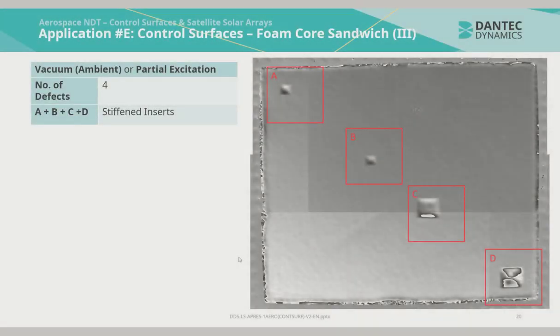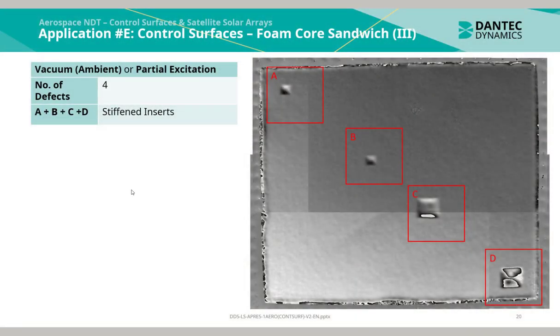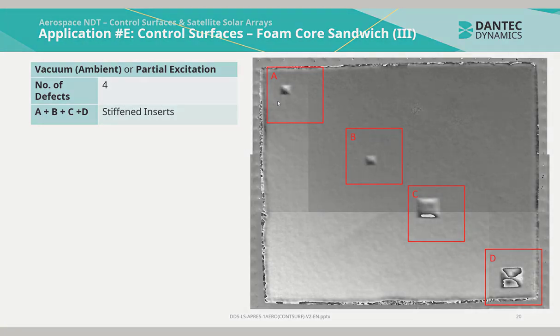There were 4 indications for this particular measurement. A, B, C and D were all artificial stiffened inserts.